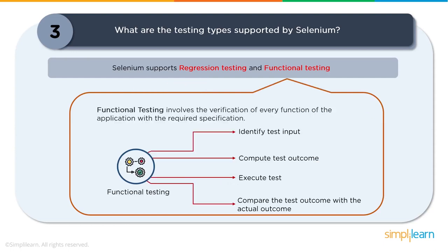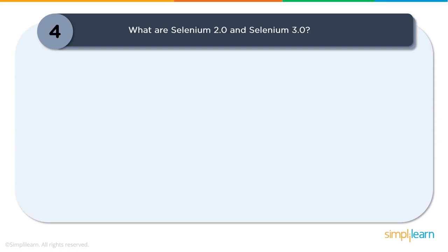You can also prioritize test cases based on critical functionalities and business impact. The second category is functional testing, which includes smoke tests, sanity tests, install tests, and database tests. The steps involved are: identifying test inputs, deriving expected outputs, designing and executing test cases, then asserting on expected versus actual outcomes.